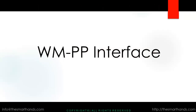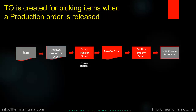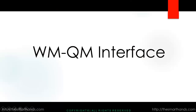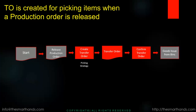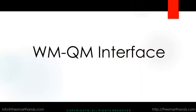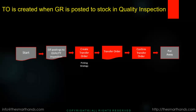Now we'll talk about the PP interface — the production planning interface with warehouse management. As soon as you release a production order in SAP, it creates a transfer requirement for the BOM components, and via the picking strategy a transfer order is created and confirmed, after which the goods are issued. The same goes for the QM quality management module: as soon as goods are received for quality inspection via MIGO, a transfer order is created, confirmed, and the put-away happens.